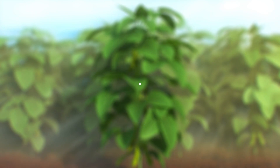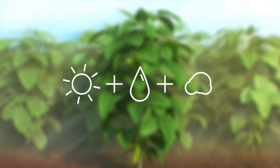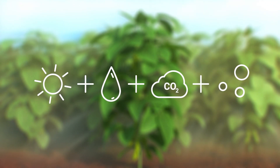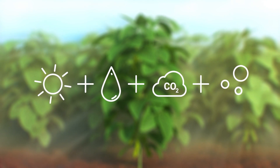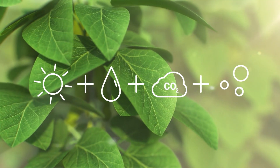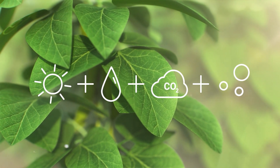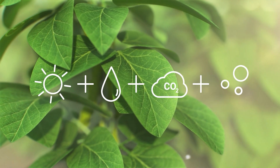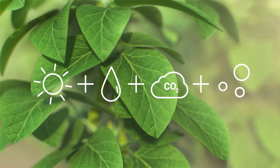Plants need sunlight, water, CO2, and nutrients in order to properly perform photosynthesis. Light, water, and CO2 are given by nature. Nutrients are mostly provided by the soil.